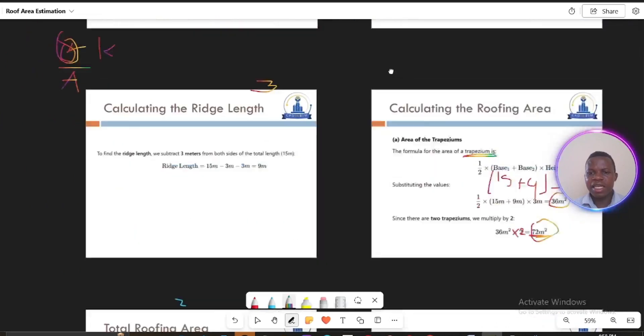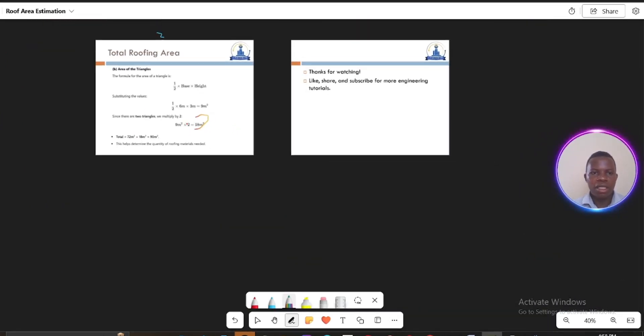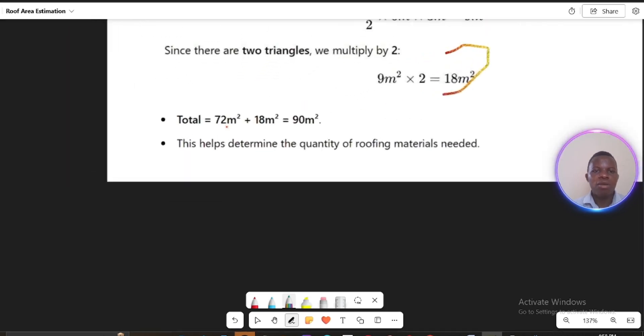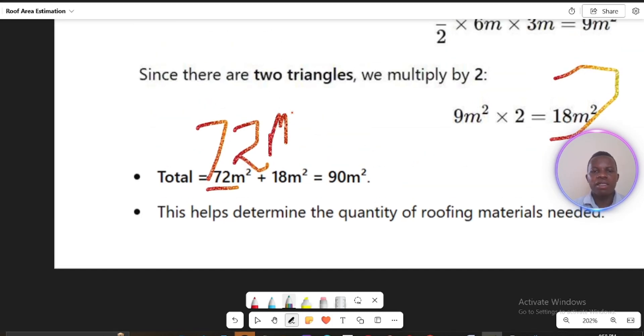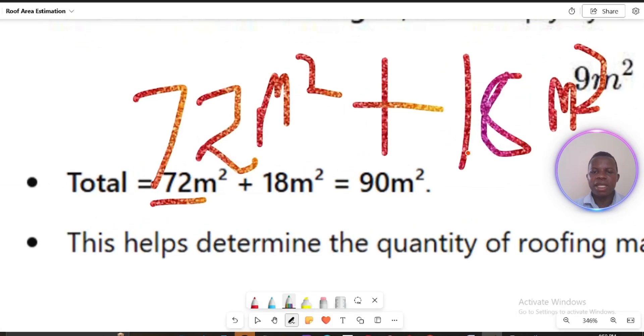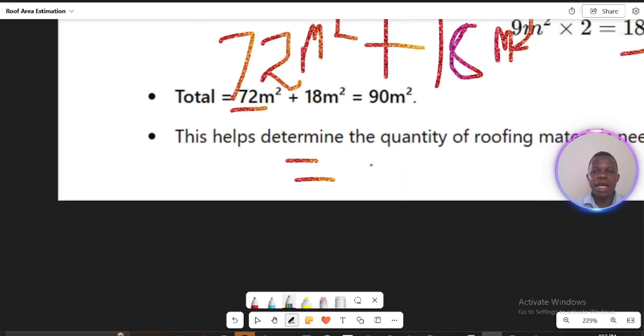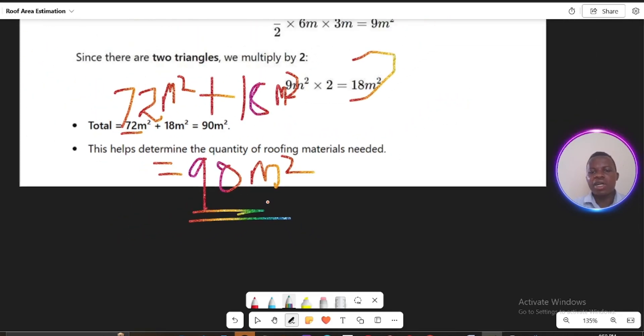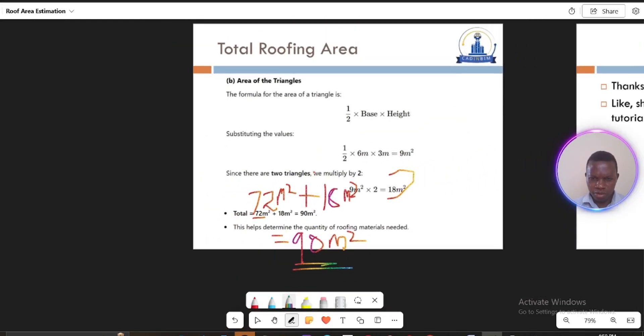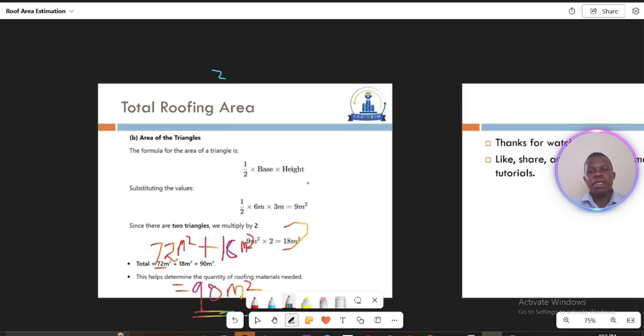So remember that our first area was 72 and we also have 18. So in our conclusion, the total area will be 72 square meters, that's the area of the two trapezoids, plus 18 square meters. So if you add 72 plus 18, then you are going to get 90 square meters. That's how to calculate the area of a hip roof. Thank you for listening. Let's meet in our next video. But remember to subscribe, like and comment. Thank you so much.